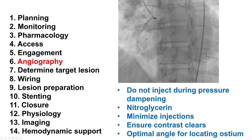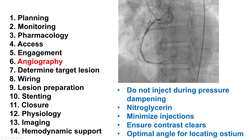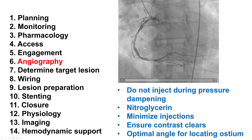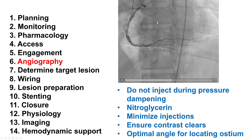Nitroglycerin should be used because sometimes engagement can cause spasm that can falsely appear as an osteal lesion. Injection should be minimized, especially when there is persistent dampening. If there is contrast retention in the vessel, which can happen when the guide is engaged, that should be relieved; otherwise it can lead to arrhythmias such as ventricular fibrillation. Finally, one wants to determine where exactly the ostium of the vessel is, using various landmarks, and then use those landmarks to place subsequent stents.